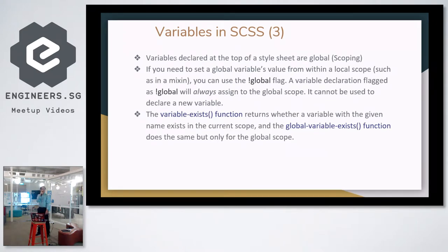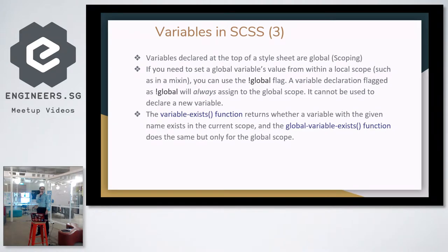In terms of variables, we can also do scoping. Variables declared at the top of a style sheet are global. You can set a global variable's value from within a local scope by using the !global flag. A variable declaration flagged as !global will always assign to the global scope — it cannot be used to declare a new variable. The variable-exists() function returns whether a variable with the given name exists in the current scope, and the global-variable-exists() function does the same but only for the global scope.